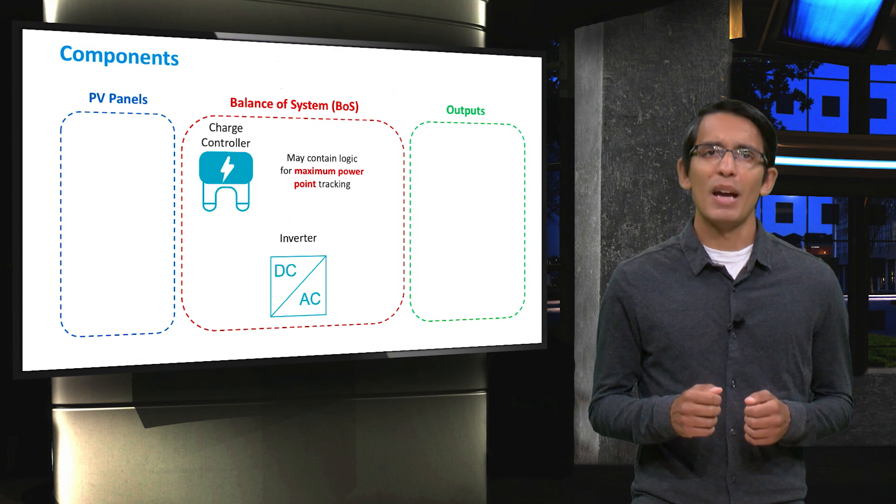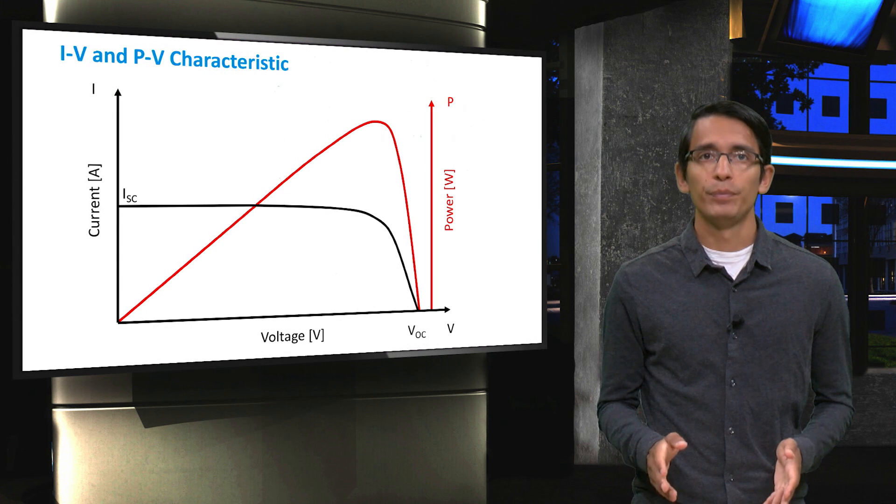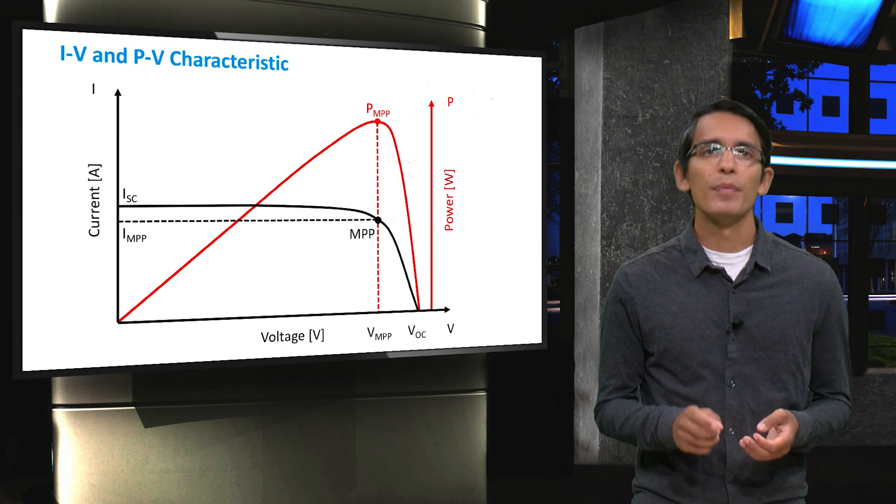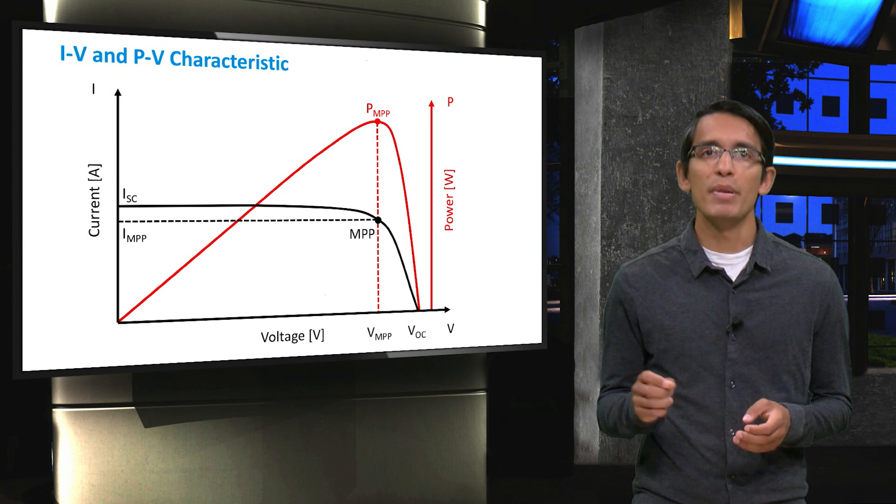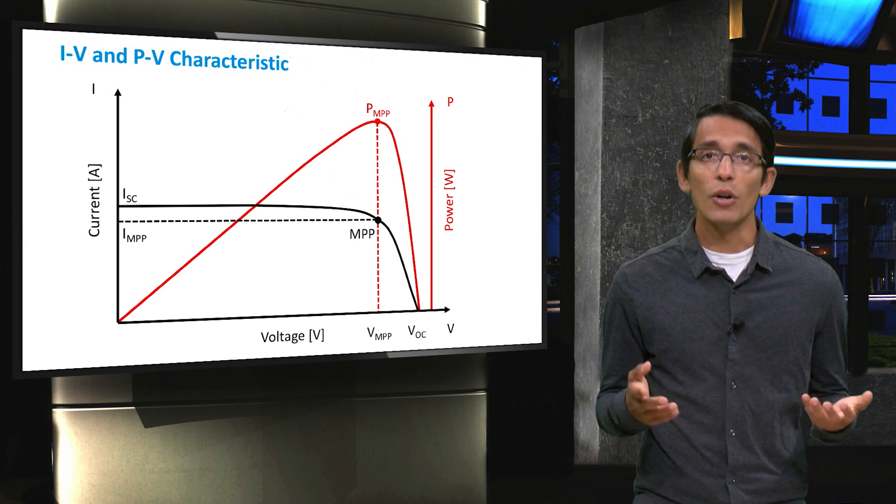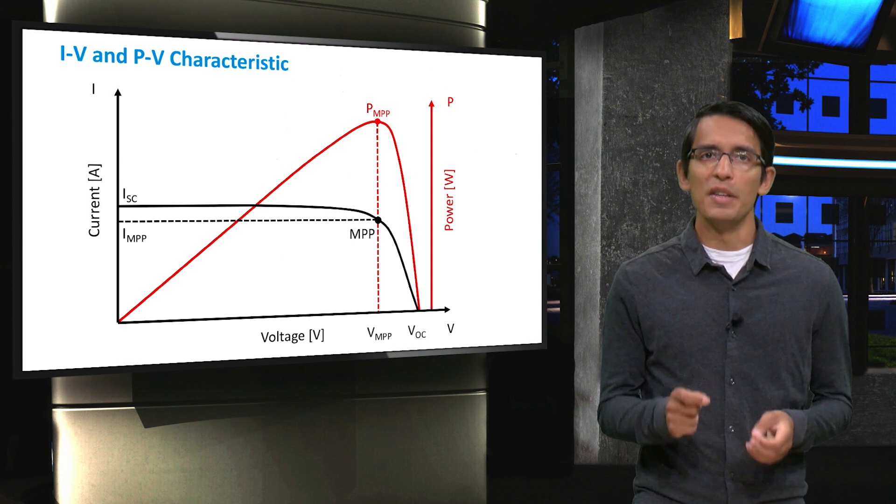But why do we need to track the maximum power point? Here you can see the familiar IV curve of a solar cell or solar module. You should know by now that power can be calculated as the product of current and voltage. We can therefore easily plot the power voltage curve. From this curve it is simple to see that a maximum power point is present. This maximum corresponds to a certain voltage which we call VMPP and a current which we call IMPP.